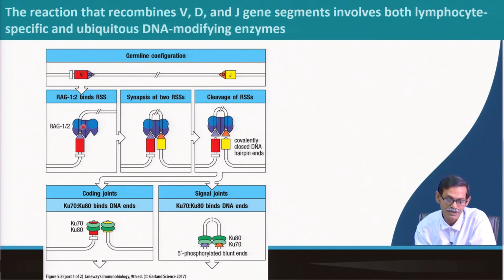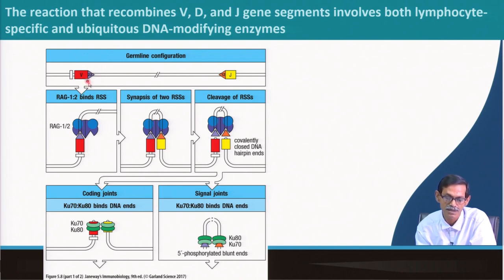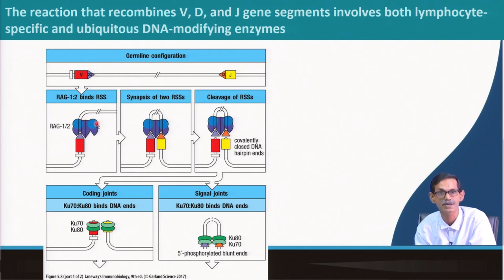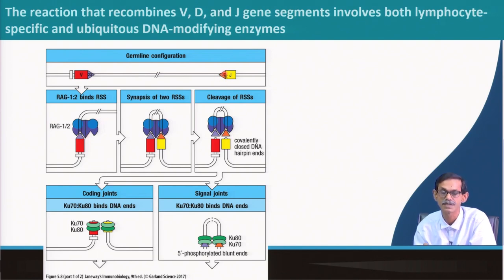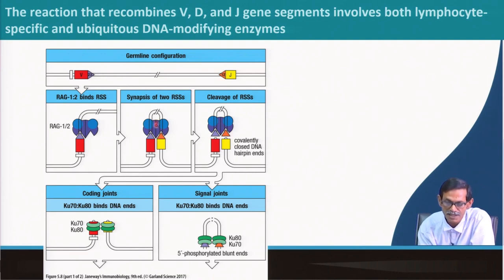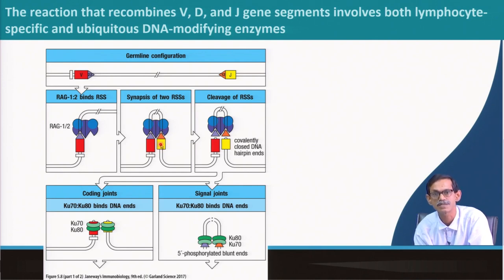RAG1 and RAG2 make a complex — RAG1 is the violet part and RAG2 is the blue circle — forming a heterodimer, and then basically a tetramer of 2 RAG1 and 2 RAG2. They first bind to the V segment, then another one binds at the J segment, bringing the V and J segments together.